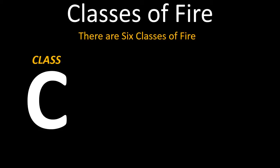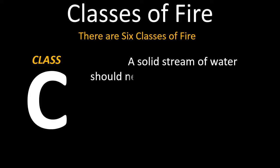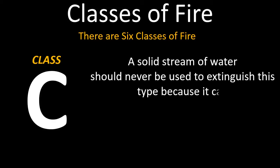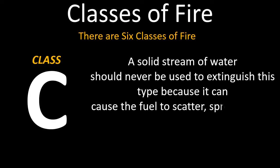Class C fire is just like an ordinary combustible fire except that the fuel used is a gas, such as natural gas. A solid stream of water should never be used to extinguish this type of fire because it can cause the fuel to scatter, spreading the flames further. The most effective way to extinguish a liquid or gas fuel fire is by inhibiting the chemical chain reaction of the fire, which is done by dry chemical and halon extinguishing agents.